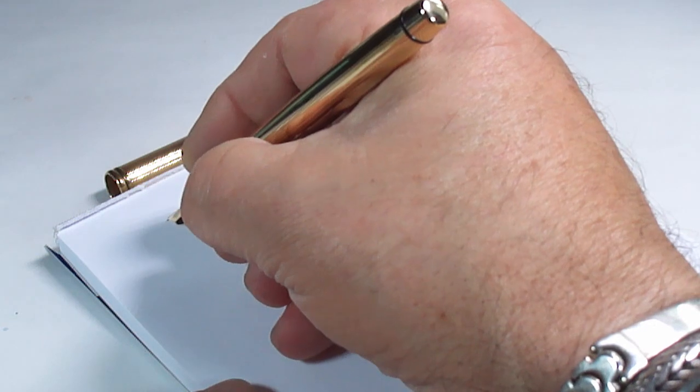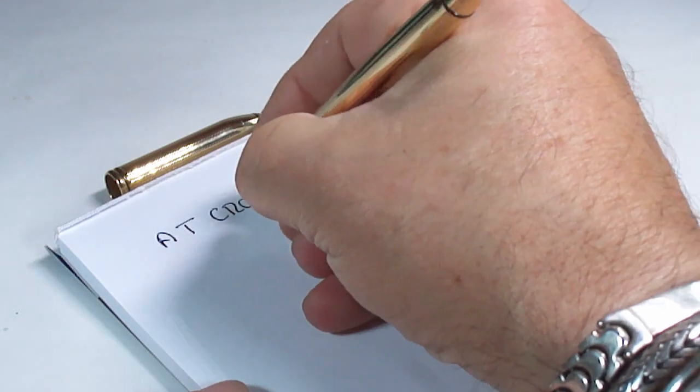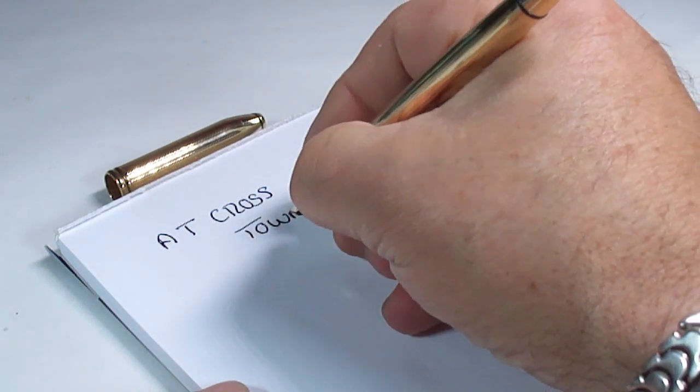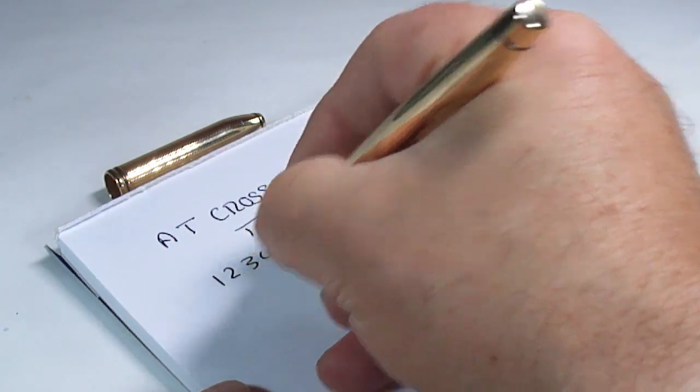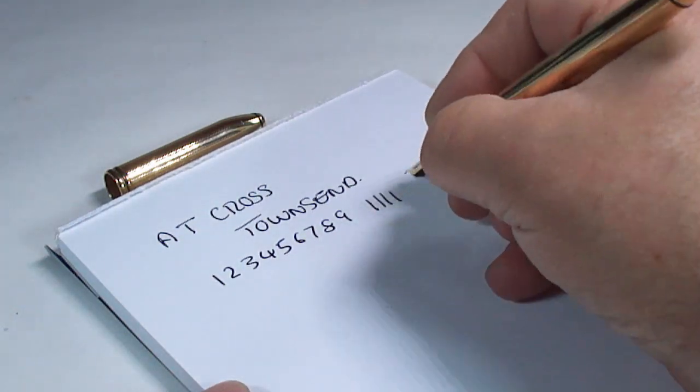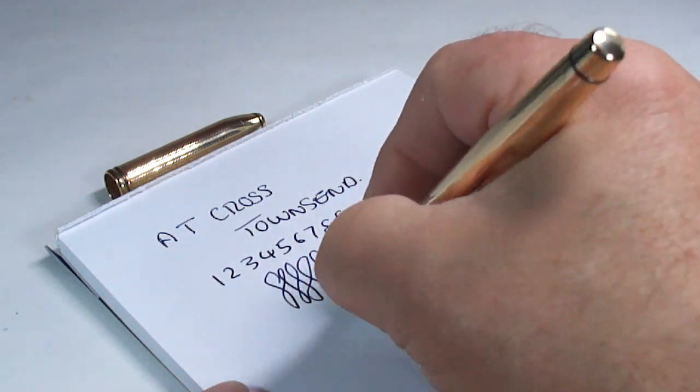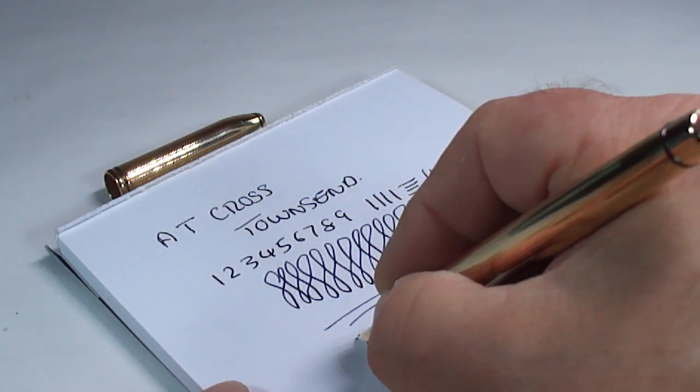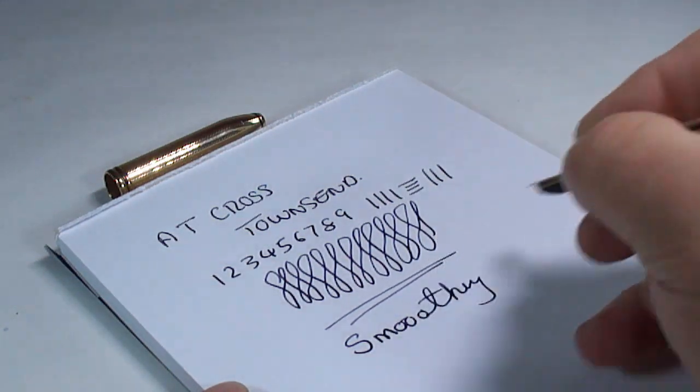What we've got is a Cross, and this one is the Townsend. I don't expect any flex on the nib, but it's writing.